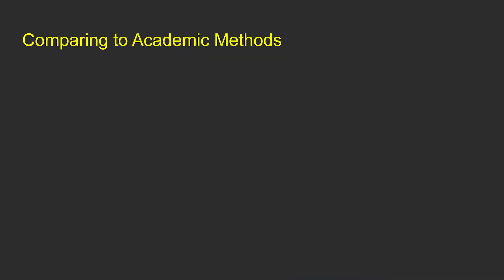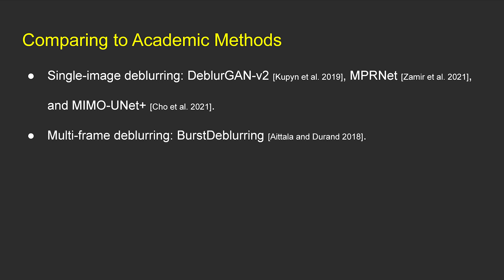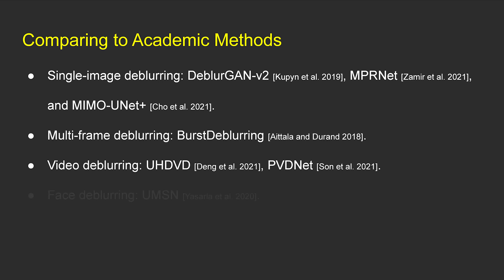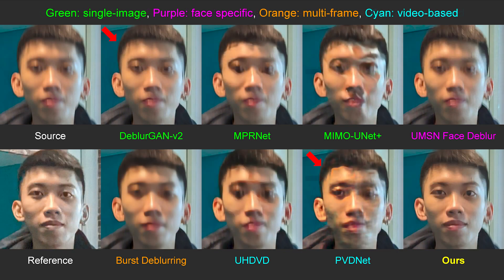We also compare our results with recent academic approaches, including three generic single-image de-blurring methods, one multi-frame de-blurring method, two video de-blurring methods, and a face de-blurring method. Existing methods typically cannot remove large motion blur well — de-blurring results are either lacking facial details or containing visual artifacts such as ringing. We found that DeblurGAN-v2 and PVD-Net usually produce better results among existing approaches. However, our method generates the sharpest faces without artifacts.